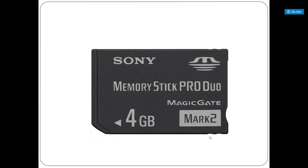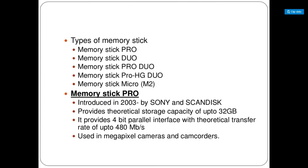Even though the types look similar, there are a few technical differences. The types of memory sticks include Memory Stick Pro, Pro Duo, Pro HG Duo, and Stick Micro M2. Memory Stick Pro was introduced in 2003 by Sony and SanDisk with a theoretical storage of up to 32 GB. It is theoretical because the full 32 GB is not available — around 28–29 GB is usable as the rest is used for system mounting data. It provides a 4-bit parallel interface with a theoretical transfer rate of up to 480 Mbps and is used in megapixel cameras and camcorders.